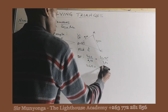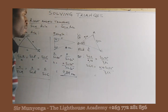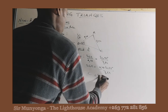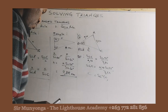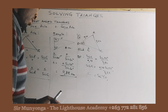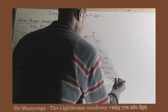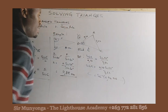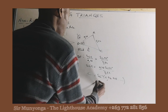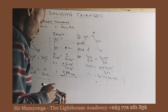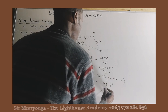Sine C will be equal to 4.28 times sine 53 degrees over 3.56. Let's punch that into our calculators: 4.28 times sine 53 divided by 3.56. You get 0.9615. Now to get the angle, you say C is equal to arc sine of that value — keep the value on your calculator, then press second function sine. You get 73.8 degrees.